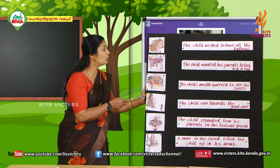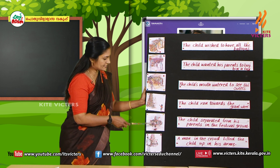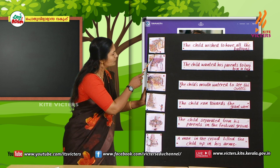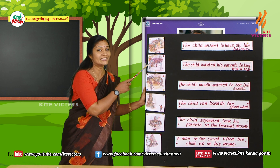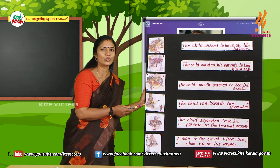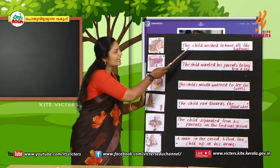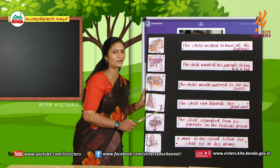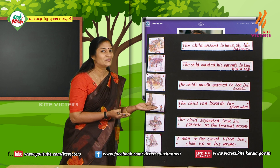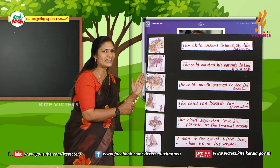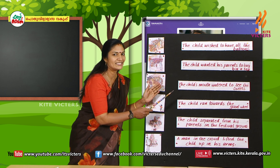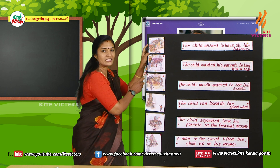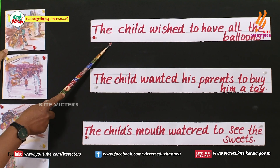Friends, now look here. Some pictures are here and some sentence strips are there. These are the events from our story, 'The Lost Child'. These are the sentence strips related to the events based on the story. We need to match the pictures with the correct events. Are you ready? Then come on, let's start. Look at the first picture. Read the first sentence strip.